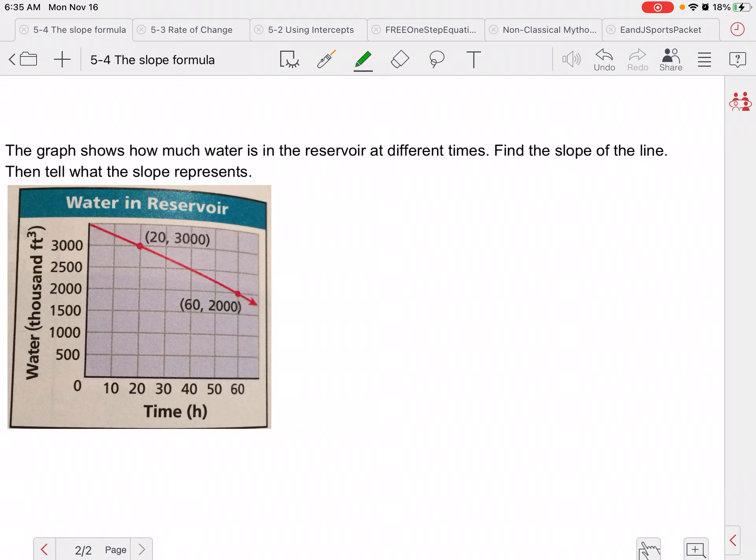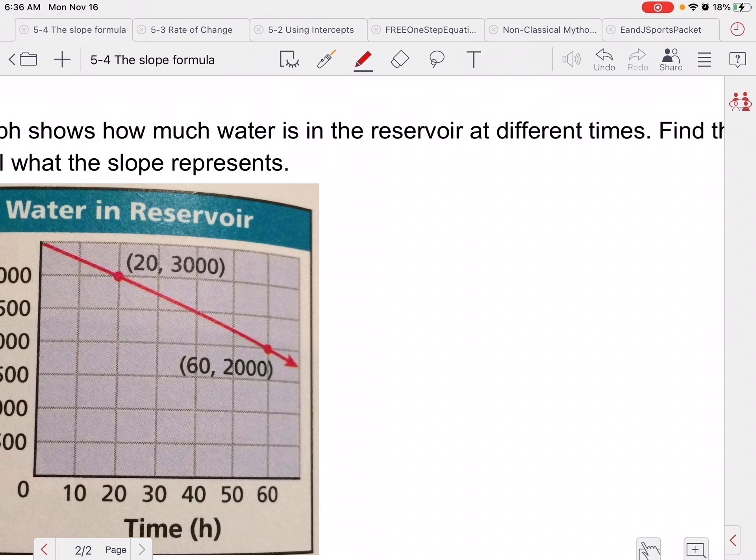Alright, let's continue here. So the graph shows how much water is in a reservoir at different times. Find the slope of the line and then tell what the slope represents. So we have x1, y1, x2, y2. Again, labeling those can really help. So again, our formula is y1 minus y2 over x1 minus x2, y's over x's, because it's rise over run for slope. Remember we talked about that yesterday.